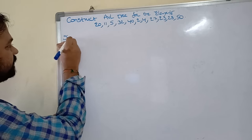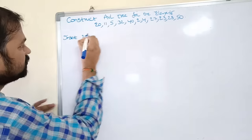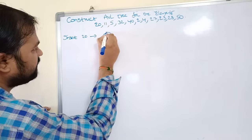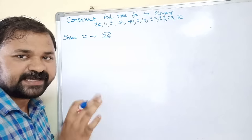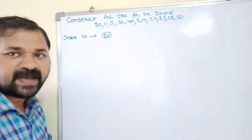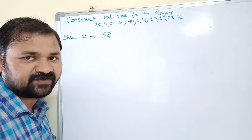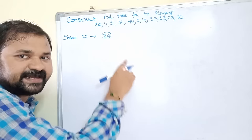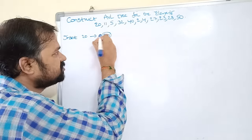The first element is 20, so insert 20. The first element will become the root node, so 20 will become the root node. After inserting each node we have to calculate the balance factor. Balance factor is equal to height of the left subtree minus height of the right subtree. Here there is no left subtree and no right subtree, so the balance factor for this node is 0.